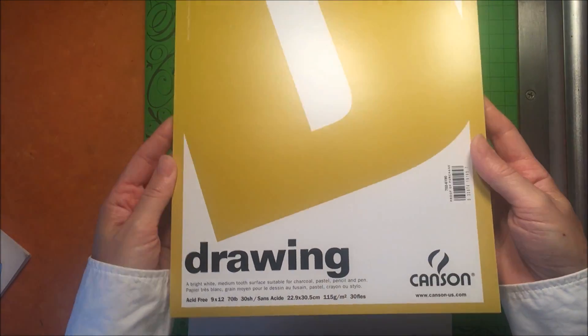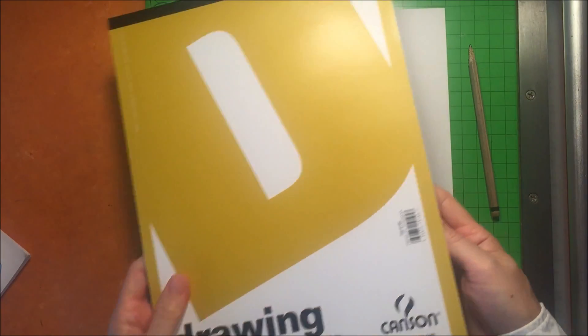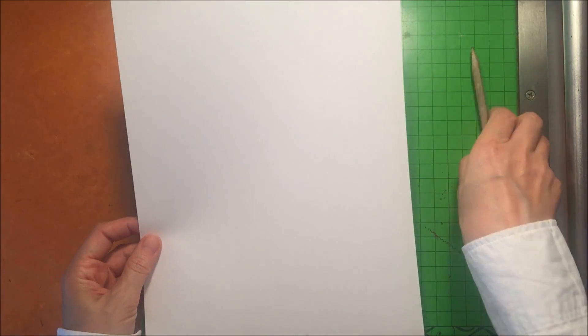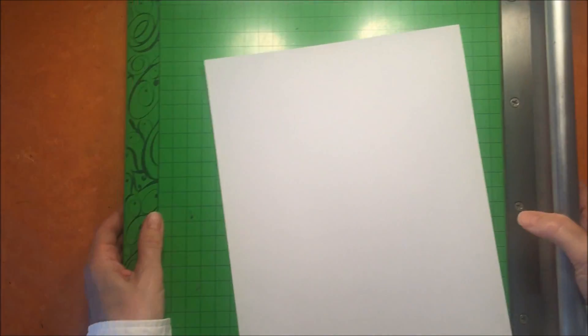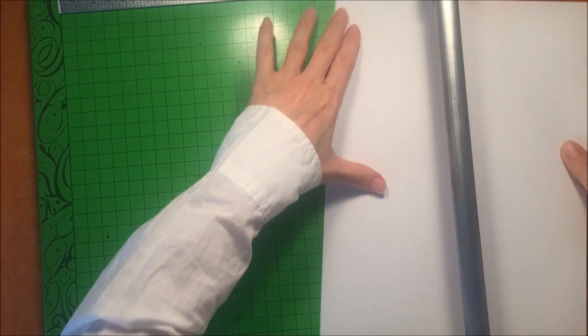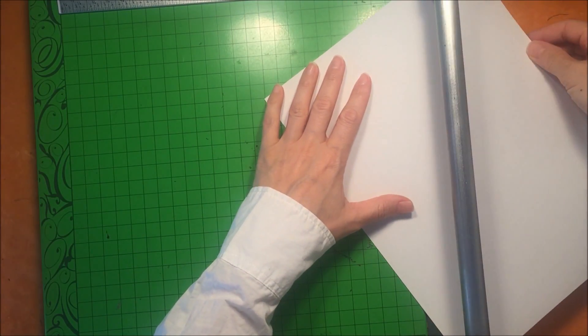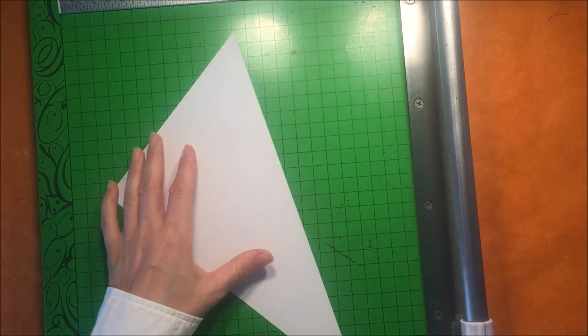I'm using some drawing paper but you could use copy paper or construction paper. I'm also using a paper trimmer but you can use a pair of scissors. I'm going to be cutting a very large right triangle but any triangle will do for this project.